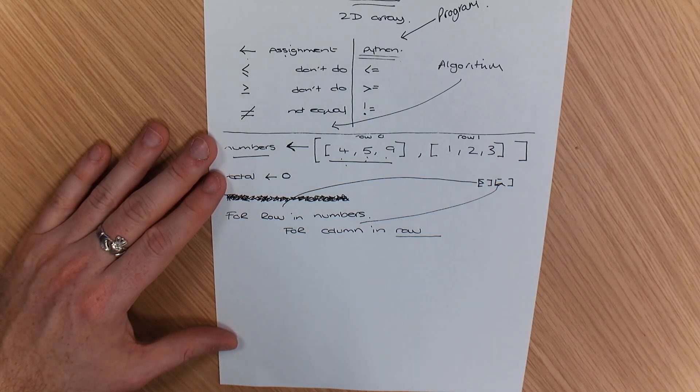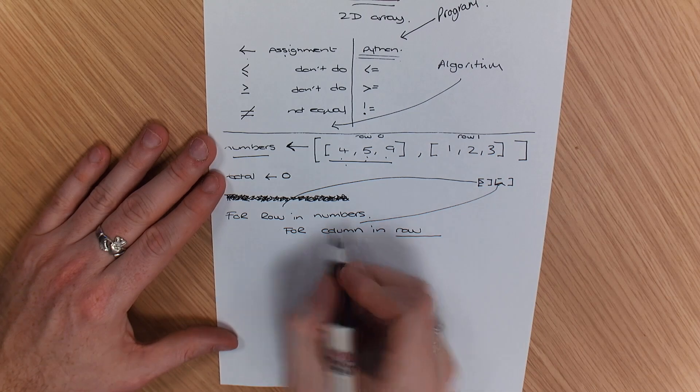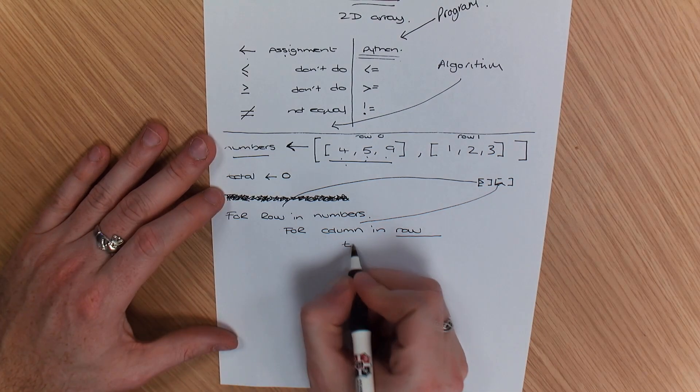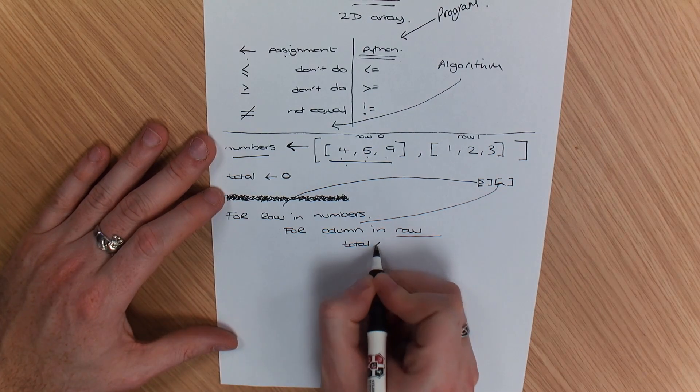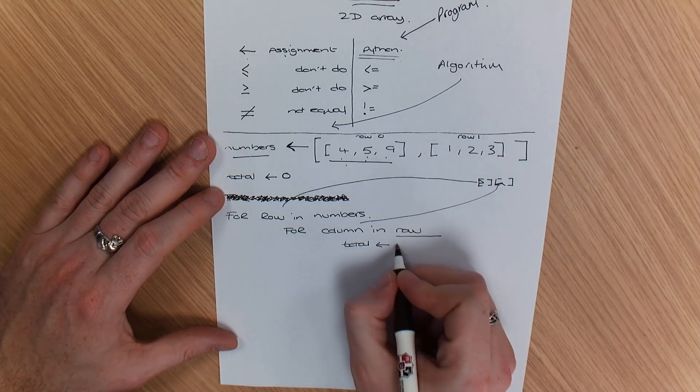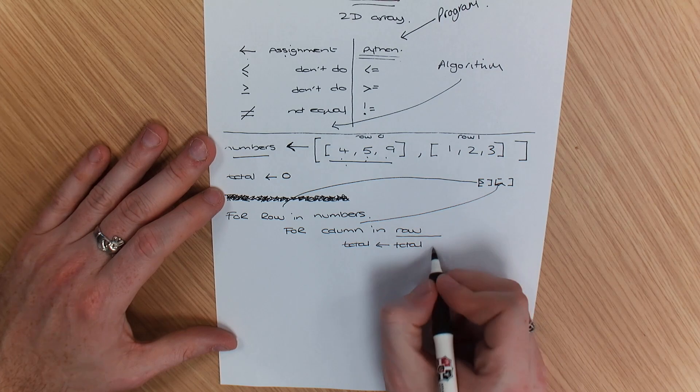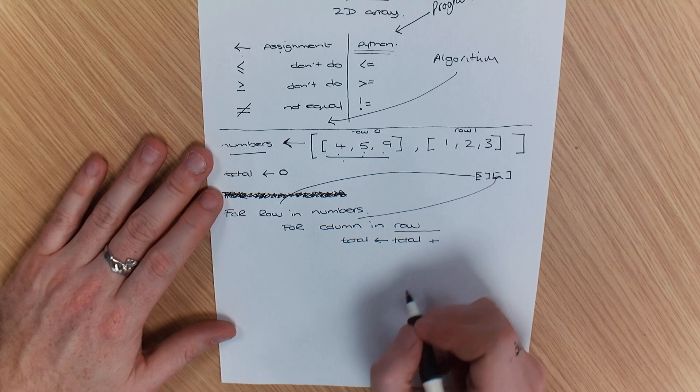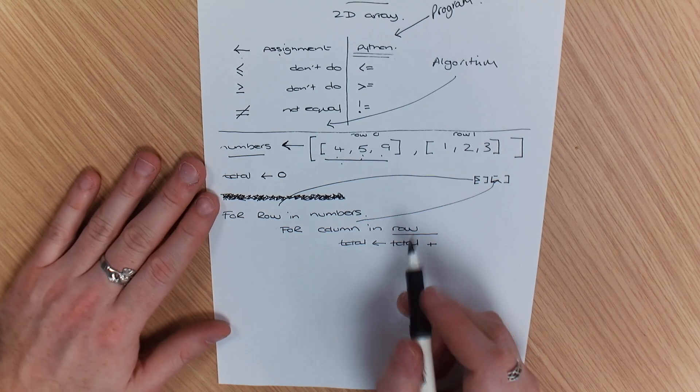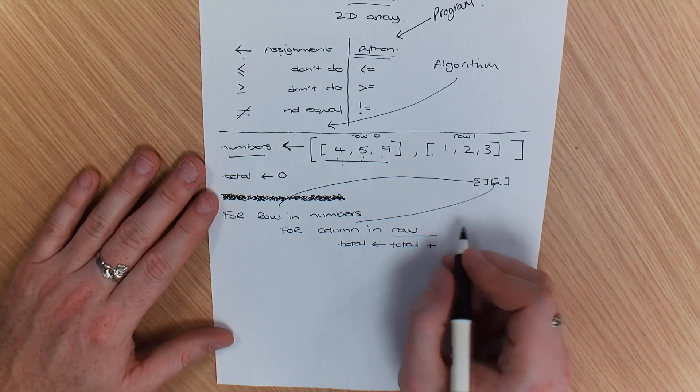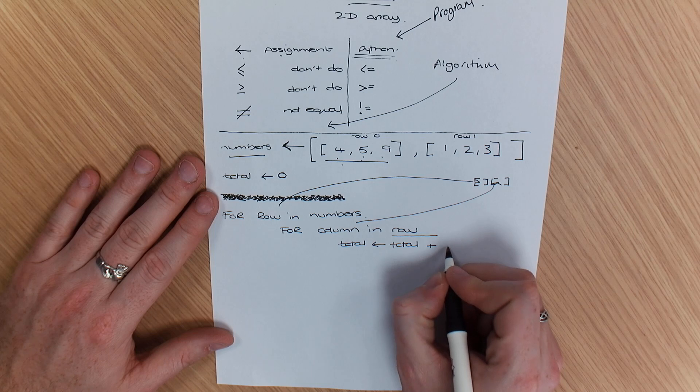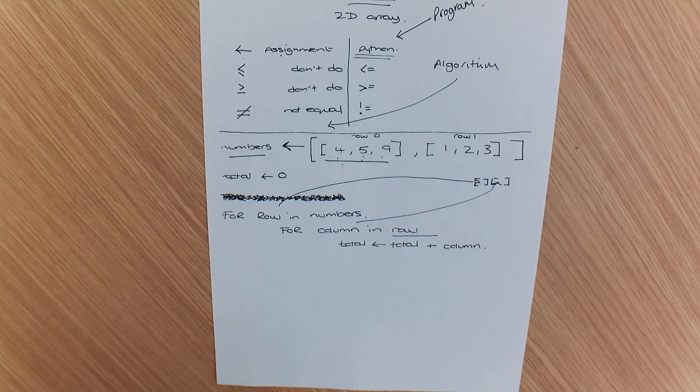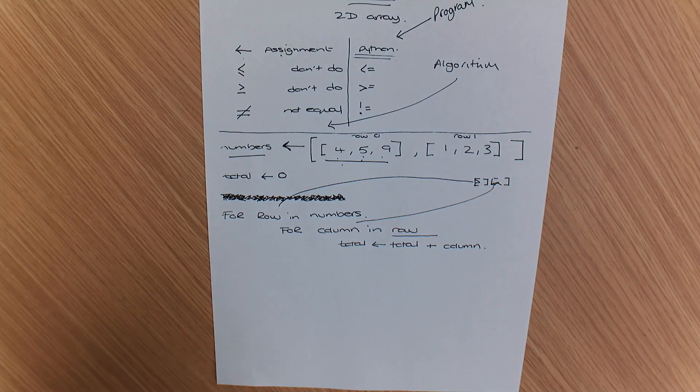Because watch what I can do now. I can use my variable called total is total plus, and what it will do is it will get the value that I'm currently on. So I can do plus column, because it's in that value.